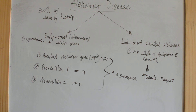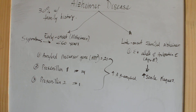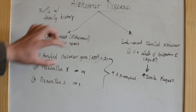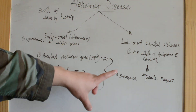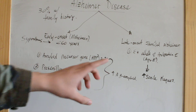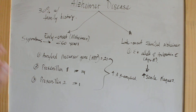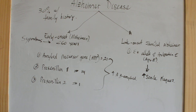Whereas on the other hand, late onset familial Alzheimer's disease is associated with the Epsilon-4 allele of the ApoE lipoprotein E gene.